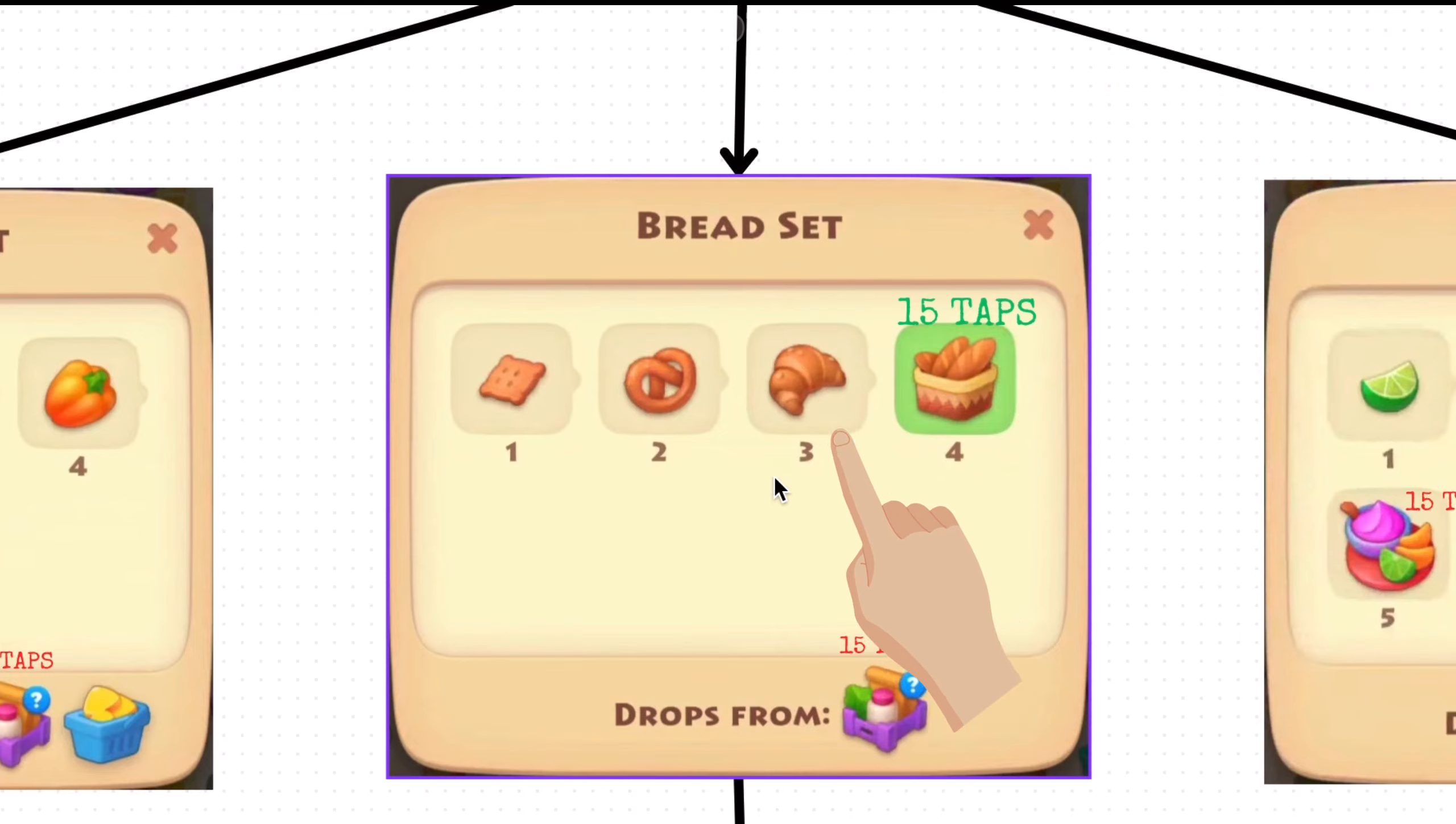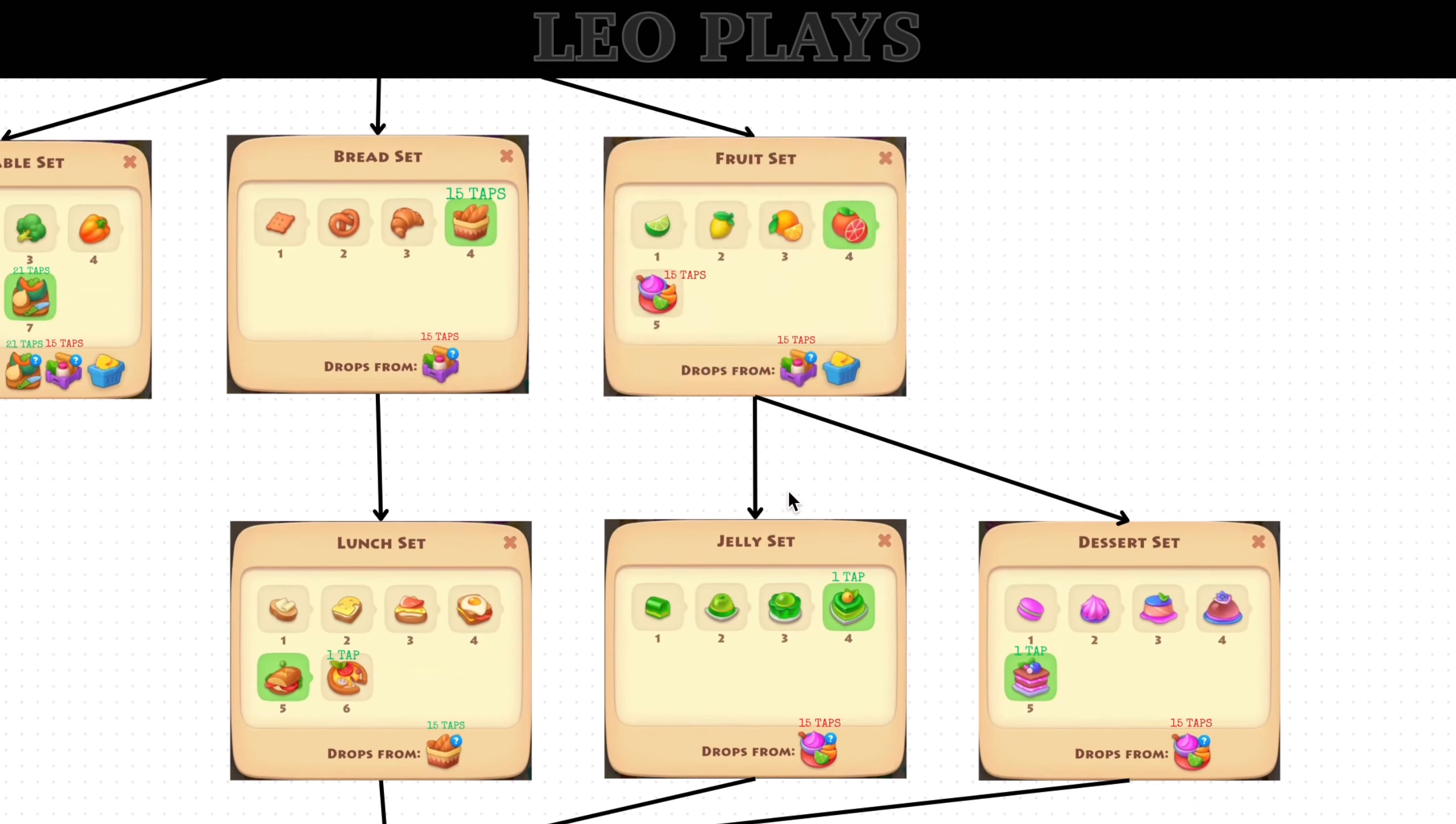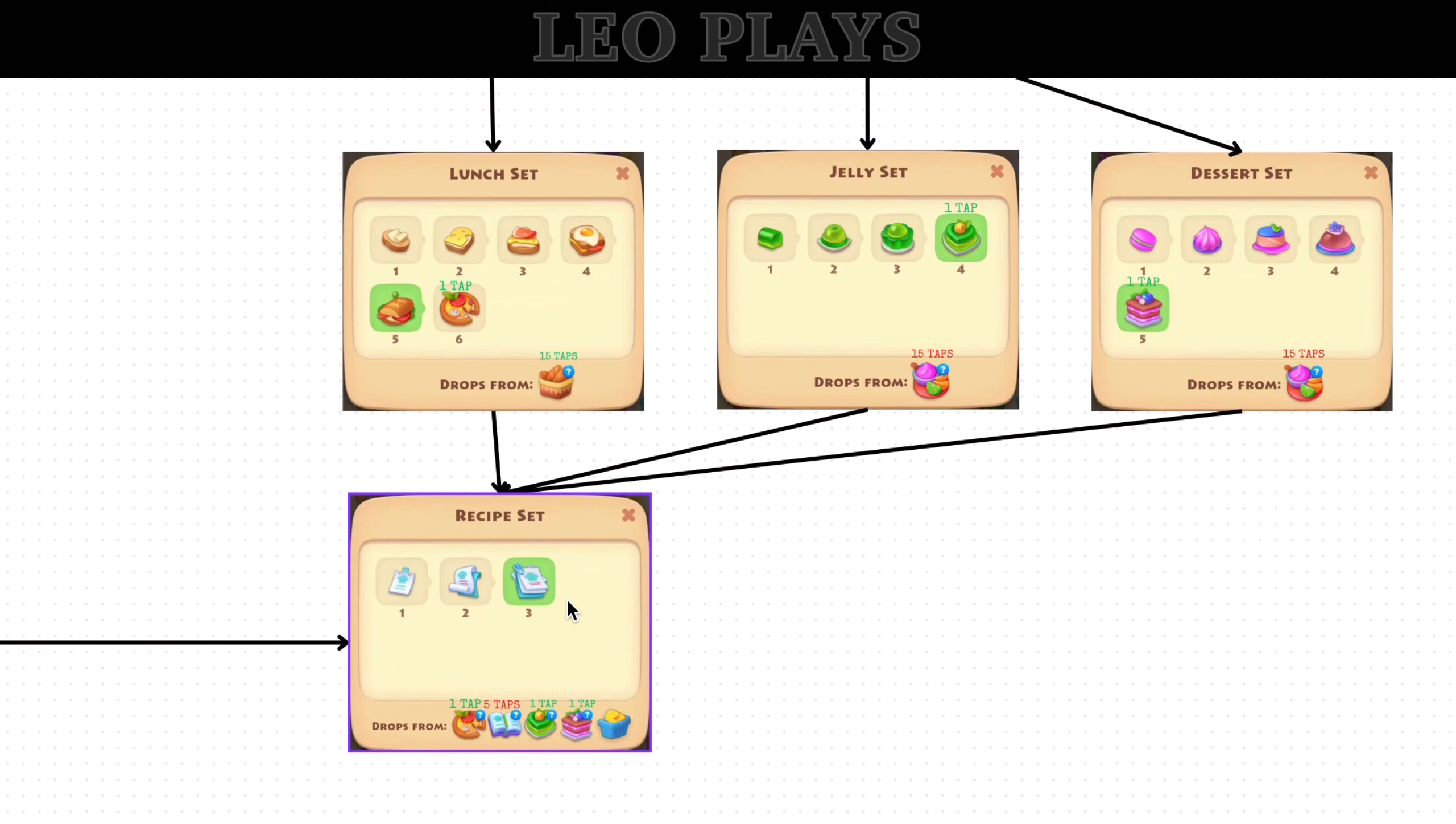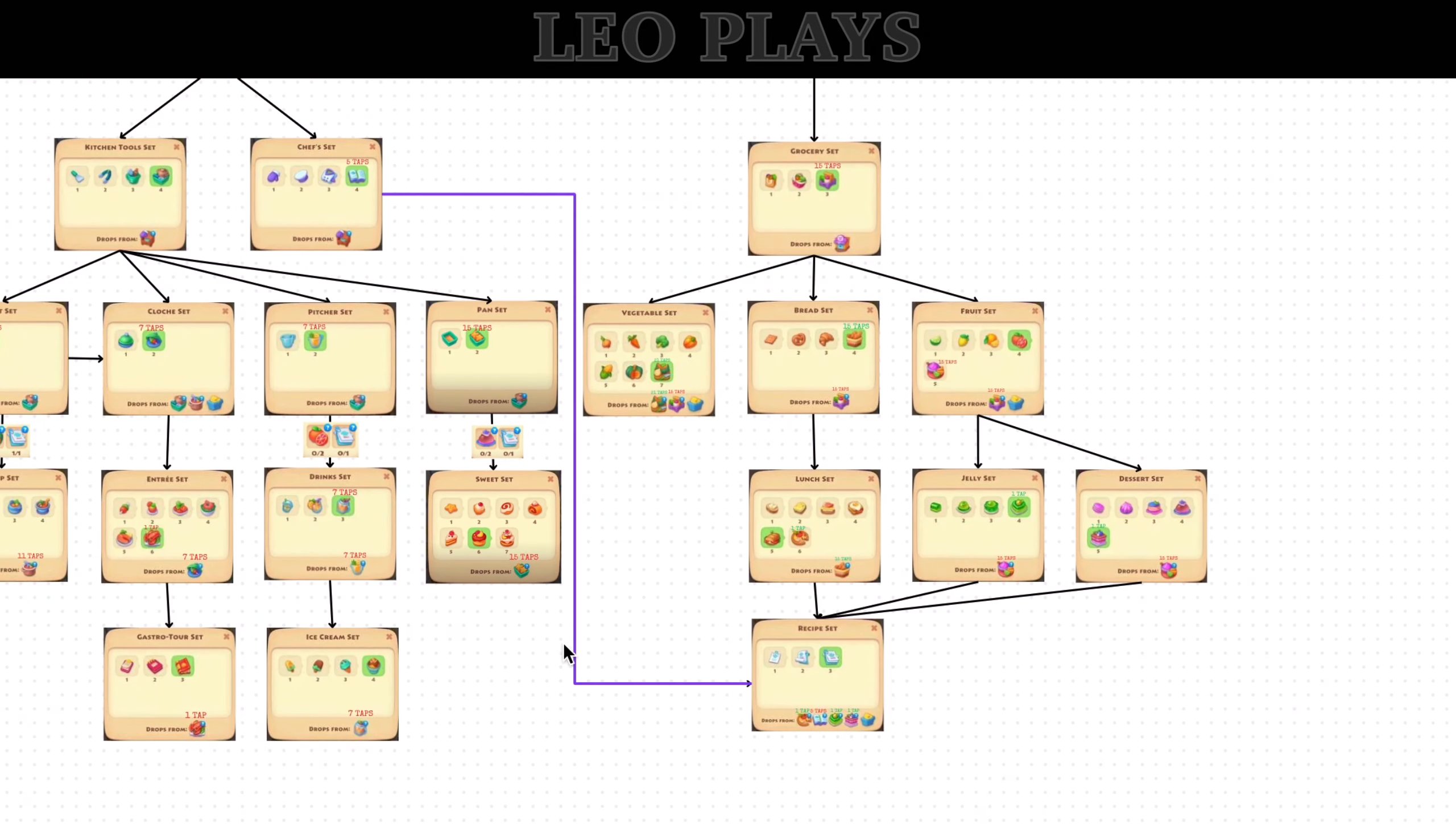Moving on, bread set makes lunch set. Fruit set makes jelly and dessert set. Lunch, jelly, and dessert set all make recipe set. Oh, and chef set also makes recipe set.